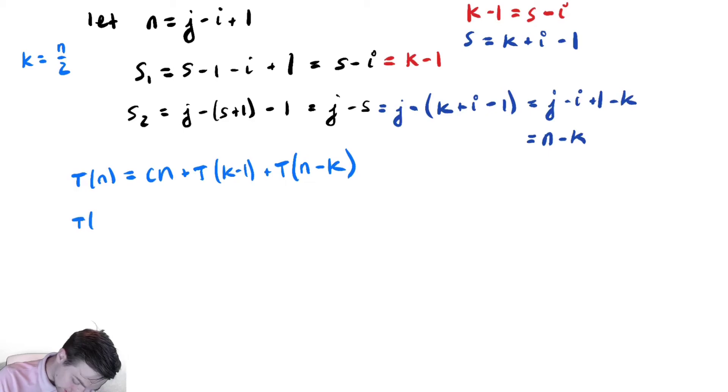we get t of n equals cn plus t of n over 2 minus 1 plus t of n minus n over 2, which I'm going to do some approximating here to make our lives easier. This is approximately cn plus t of n over 2 plus t of n over 2. That's t of n.